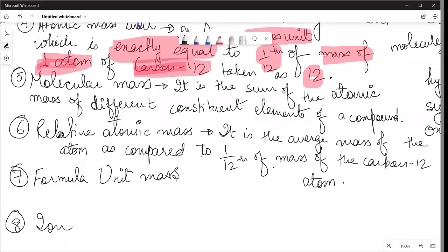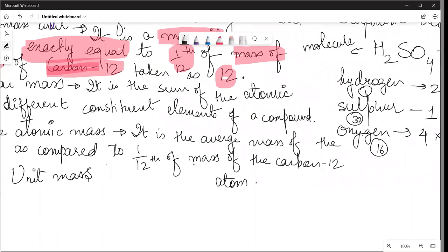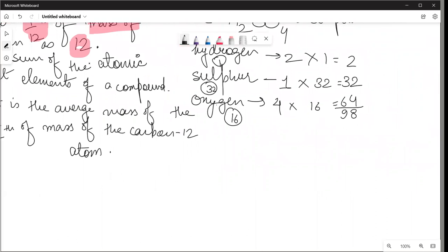It is the average mass of the atoms compared to carbon-12 atoms. What is related to atomic mass? We talk about carbon. So carbon exists as carbon-12 and carbon-14. As we talk about oxygen, it is also 16, 17, and 18. It exists in nature in 3 forms.